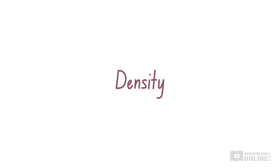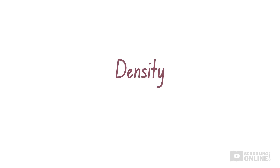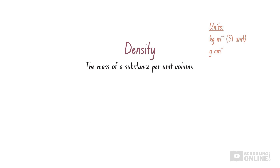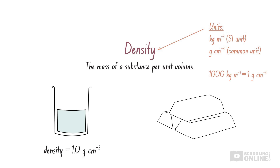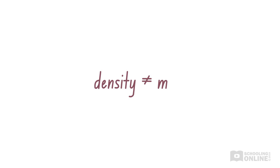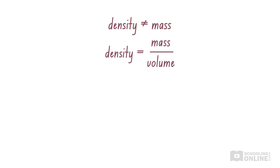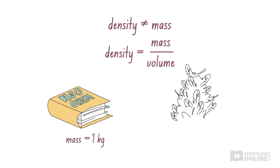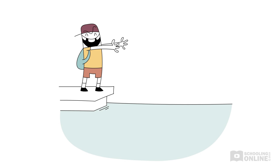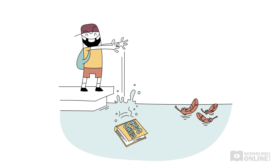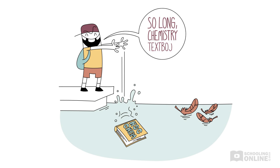In some mixtures, the key difference between two or more pure substances is their density. Density is the mass of a substance per unit volume. We usually measure density in kilograms per cubic metre, or in grams per cubic centimetre. For example, water has a density of approximately 1 gram per cubic centimetre, while iron has a density of 7.8 grams per cubic centimetre. The mass or weight of a substance is not the same as its density — density is mass divided by volume. If we consider a 1 kilogram chemistry textbook and 1 kilogram of feathers, they both have the same mass, but the chemistry textbook will sink while the feathers will float, because the feathers take up a much larger volume and so have a lower density.